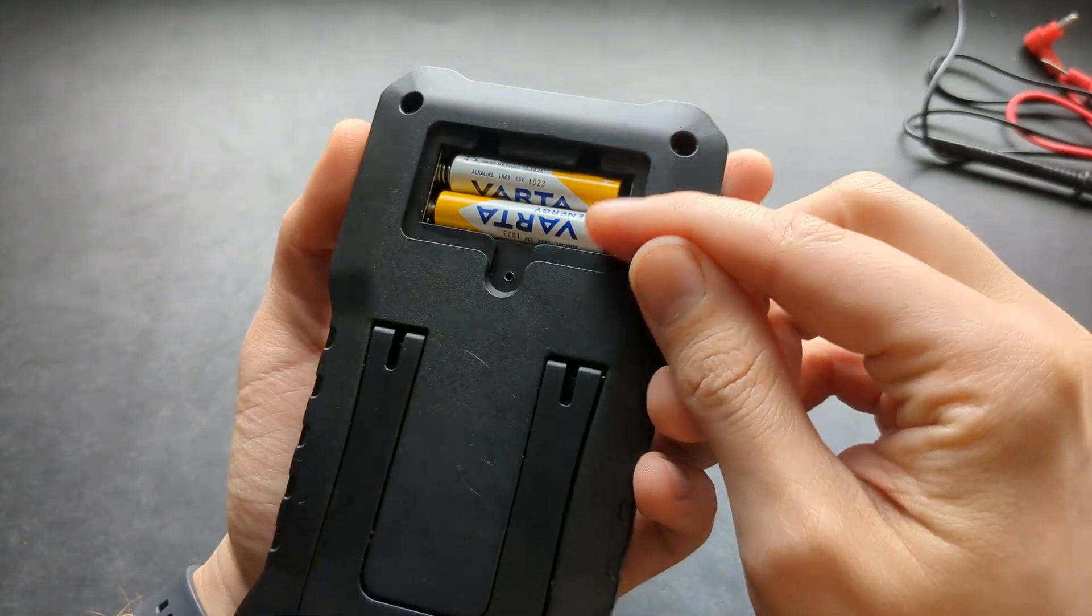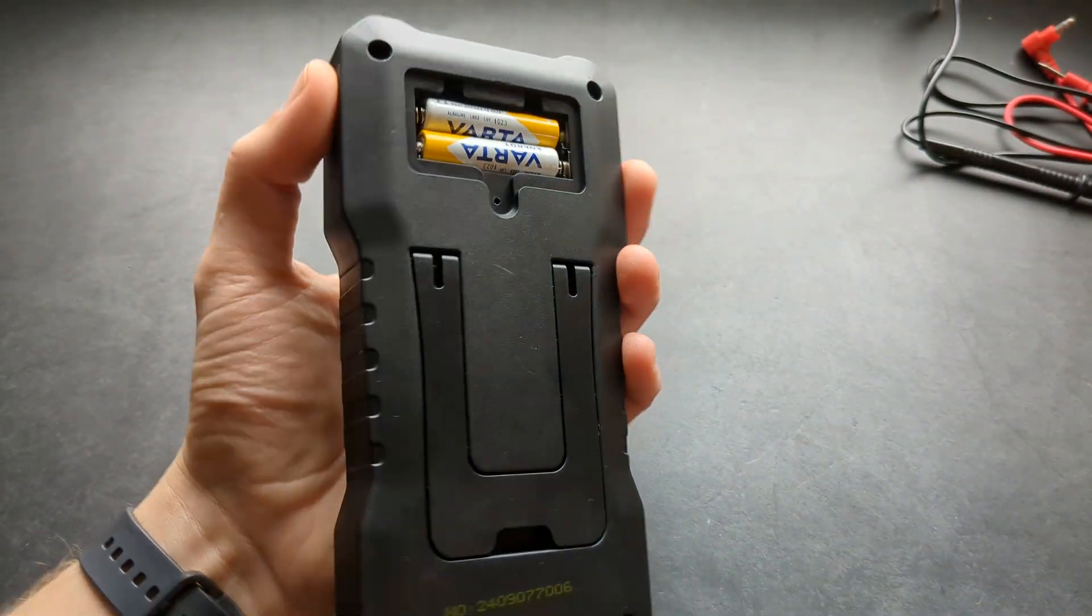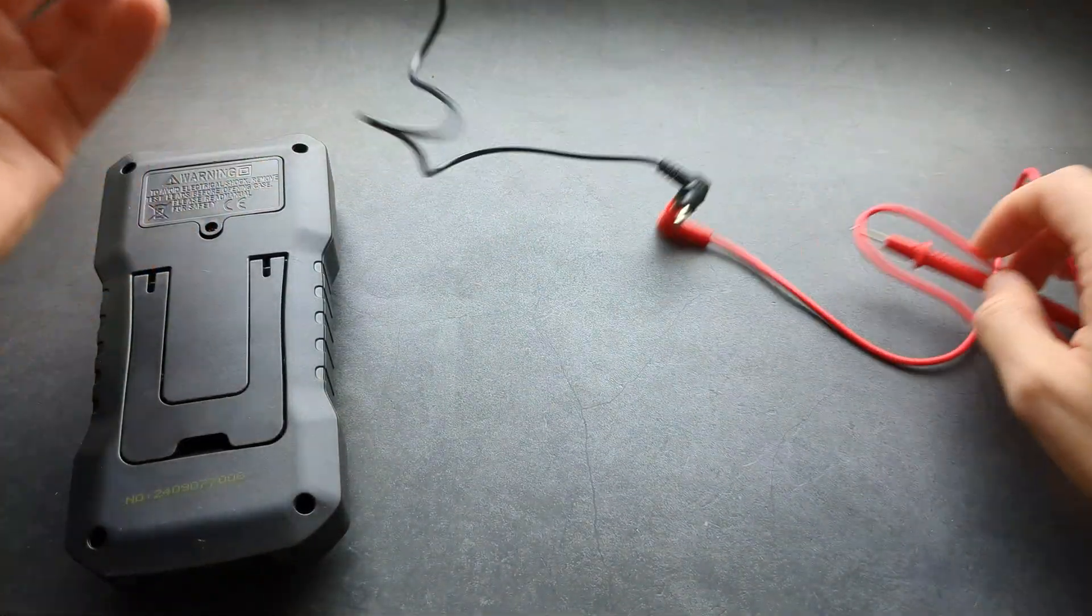Inside the box you get a multimeter that runs from two triple-A batteries, and it comes with leads.